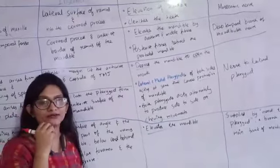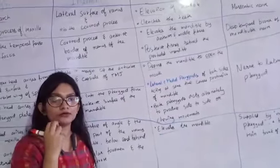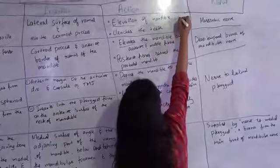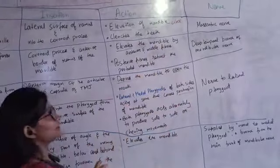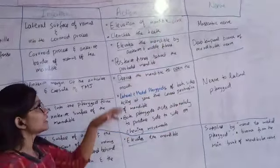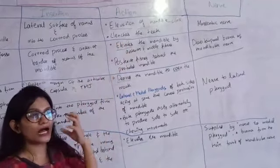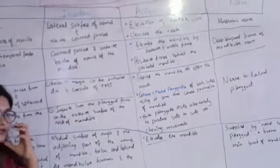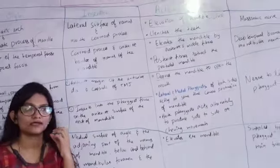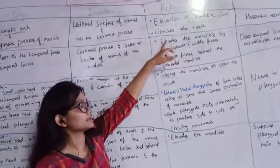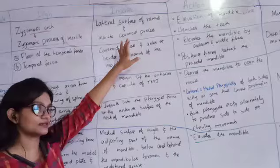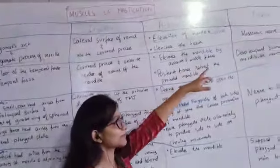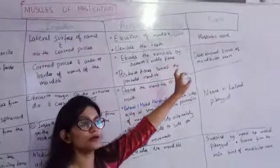Elevating the mandible brings it upward, so the mouth closes. It closes the mouth. Elevation of the mandible — it also clenches the teeth. The masseter muscle acts here, and its nerve supply is the masseteric nerve.